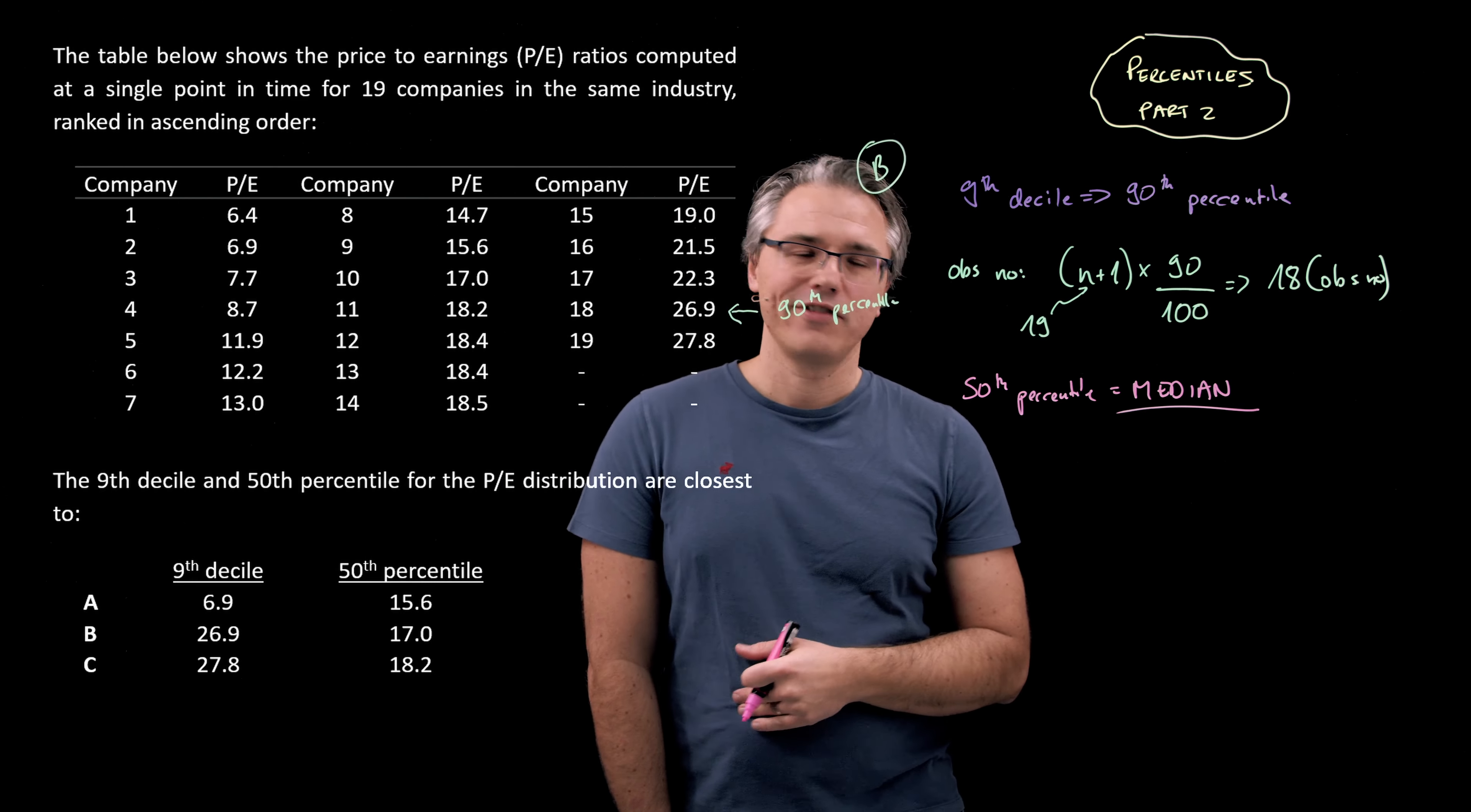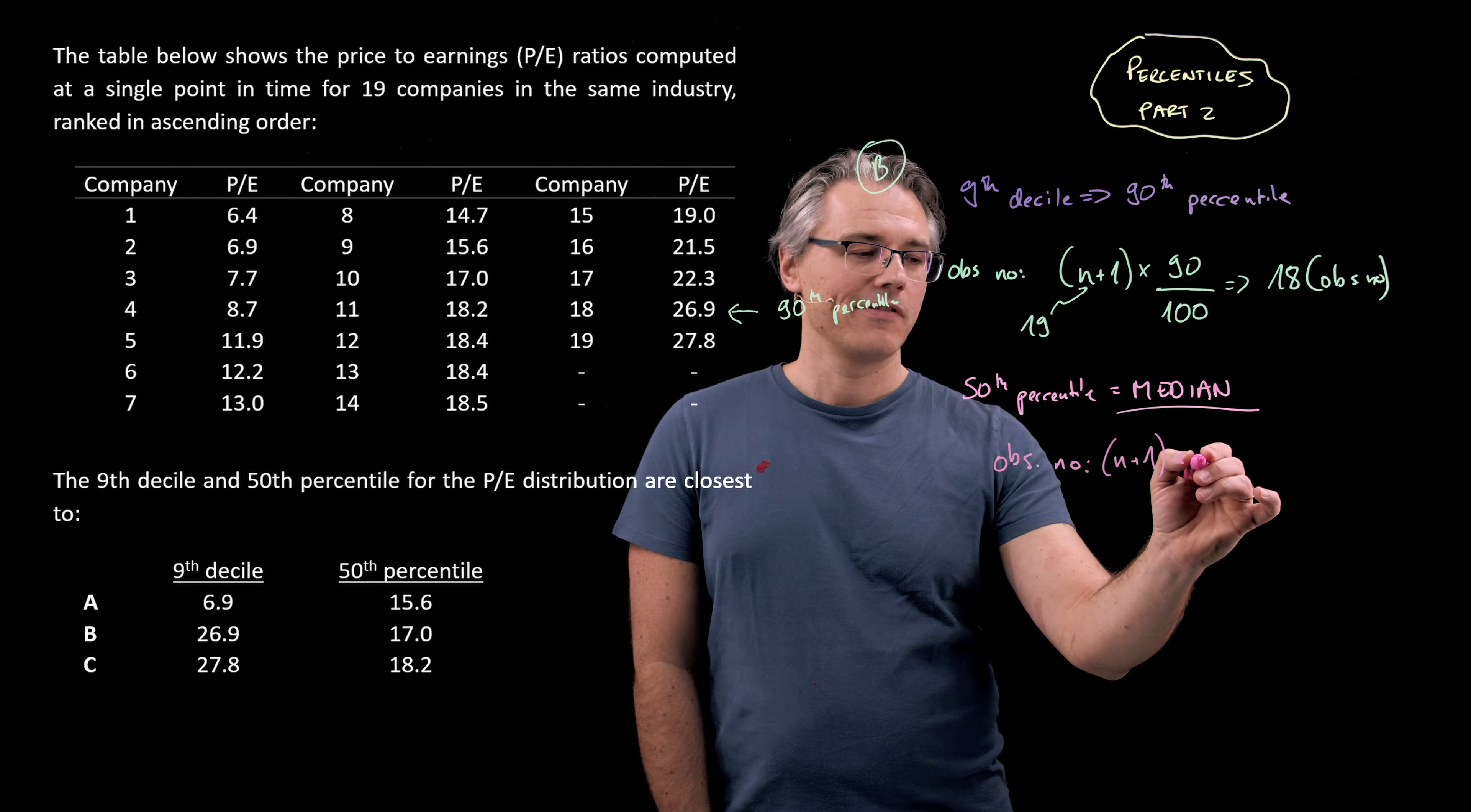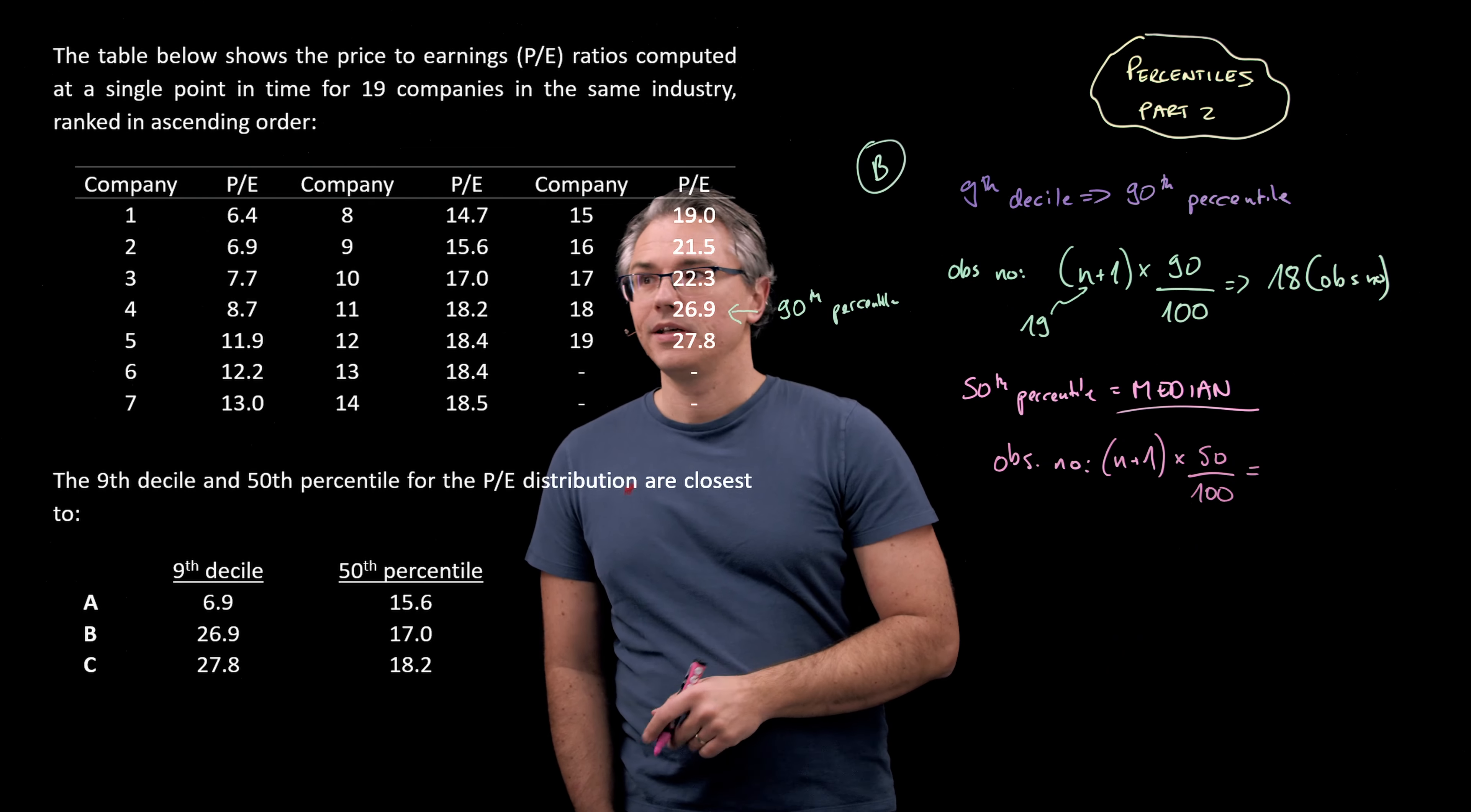So what is the observation number here? Well, it's observation number n plus 1. So basically 20 times 50 over 100 or half. And that's going to be observation number 10.